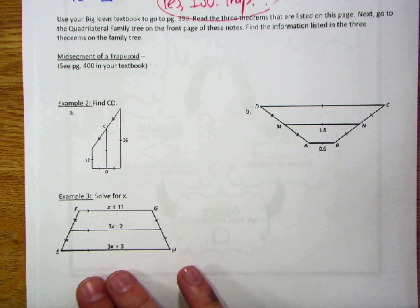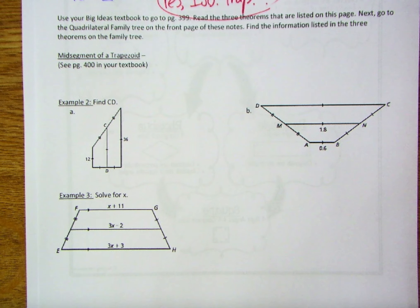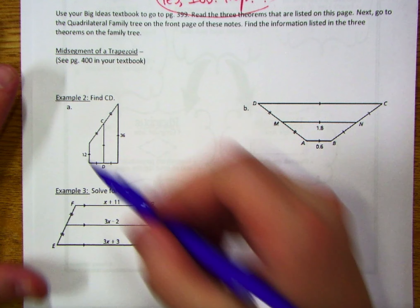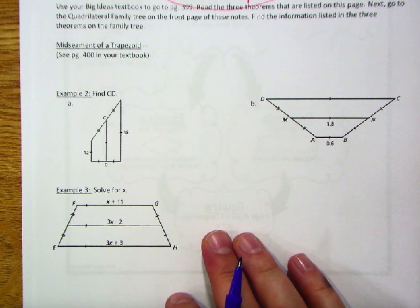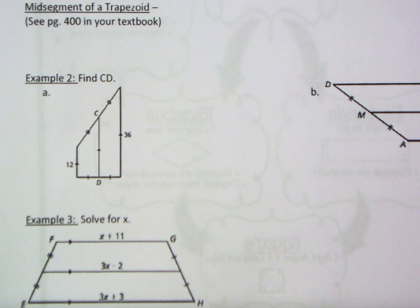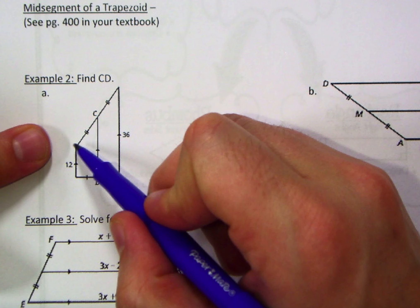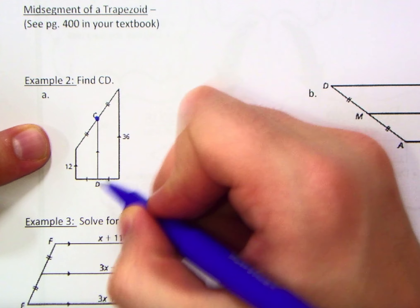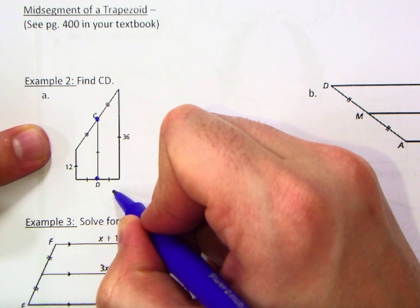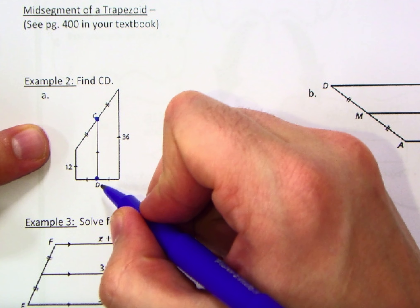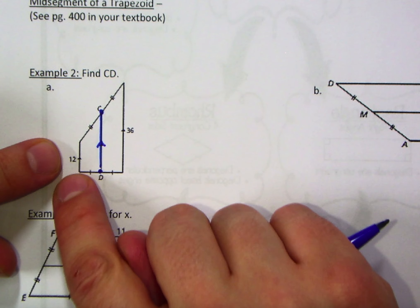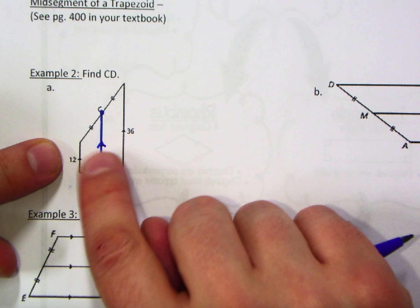Now let's apply some of the other topics from last video — finding segment lengths within trapezoids using a mid-segment. We know it's a mid-segment because C bisects one leg (two notches and two notches) and D bisects the other (one notch and one notch). Connecting those midpoints creates the mid-segment. One key property already shown is that the bases are parallel to the mid-segment.